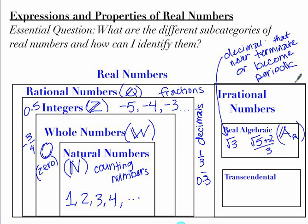Another set of irrational numbers is transcendental numbers — you'll know these ones: pi and Euler's number e. Pi and e cannot be derived algebraically, so they're considered transcendental. Like all irrational numbers, they never terminate or become periodic.